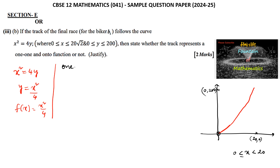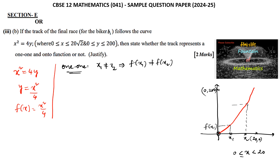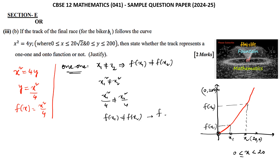For the one-to-one condition: for x1 ≠ x2, f(x1) ≠ f(x2). Here for two values x1 and x2, their function values f(x1) and f(x2) are both different. That is, x1 ≠ x2 implies x1² ≠ x2², or x1²/4 ≠ x2²/4, that is f(x1) ≠ f(x2), and hence the function f is one-to-one.